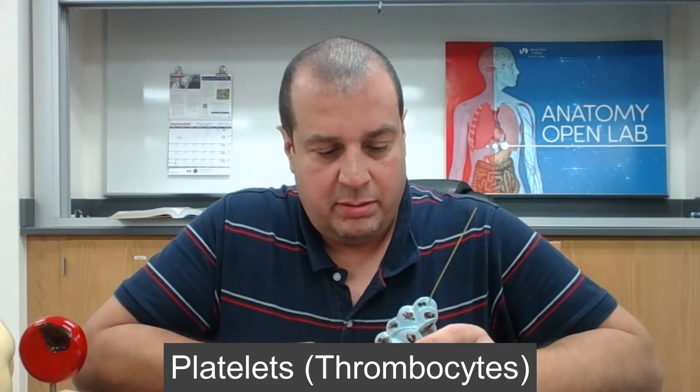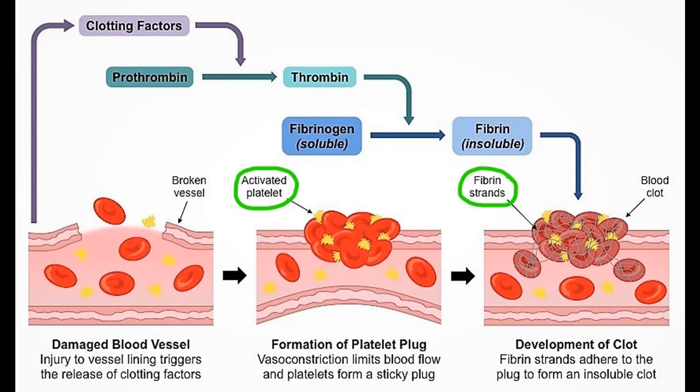The last thing I'll talk about is platelets. These are like our natural band-aid. When we get a cut, platelets go from the inside and adhere to the cut wall, pulling from the inside out to prevent blood from escaping the body. Platelets are formed by the megakaryocyte.